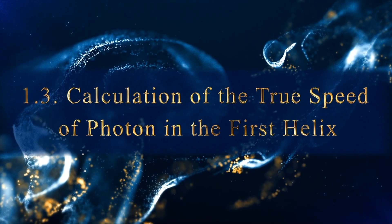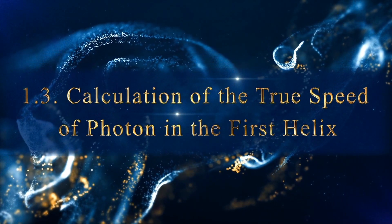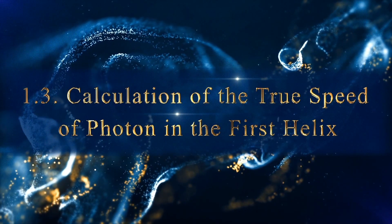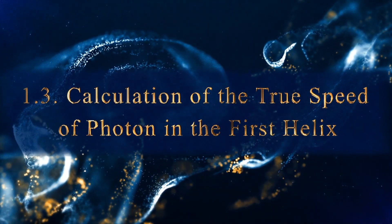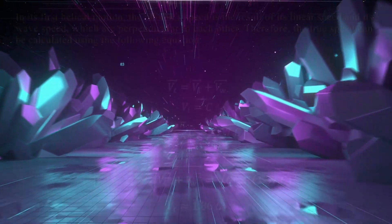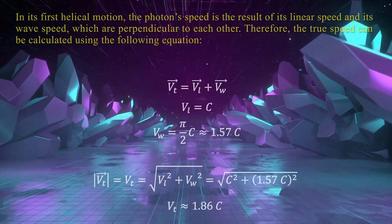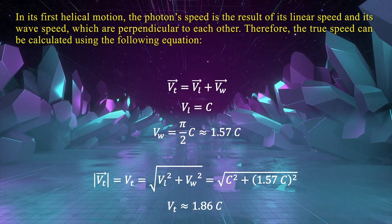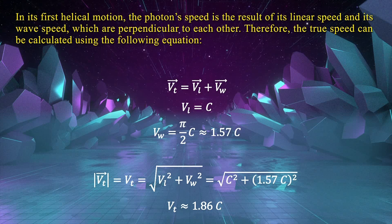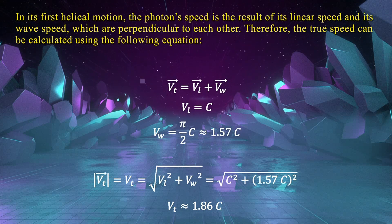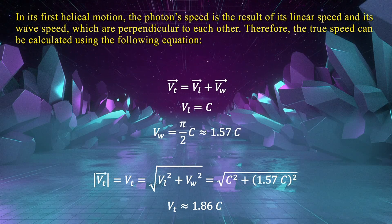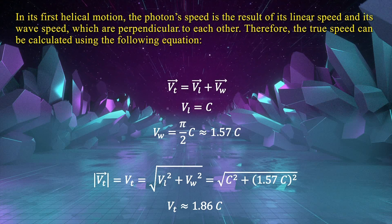Calculation of the true speed of photon in the first helix. In its first helical motion, the photon's speed is the result of its linear speed and its wave speed, which are perpendicular to each other. Therefore, the true speed can be calculated using the following equation.